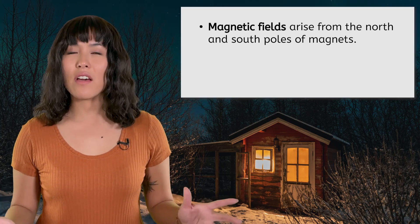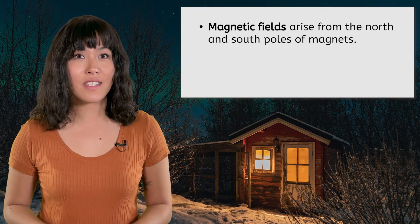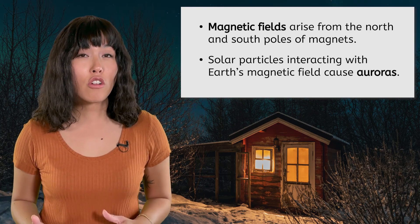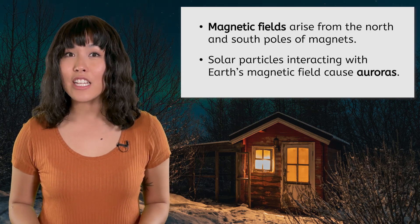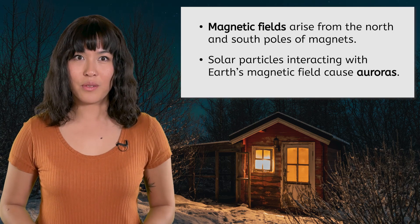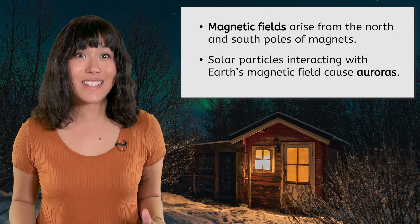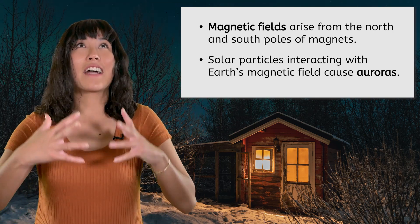As we explored magnetic fields in this lesson, we saw that they arise from the north and south poles of magnets, and that when charged particles from the Sun interact with Earth's magnetic fields, it causes the amazing displays of light known as auroras, which is still going on behind me.